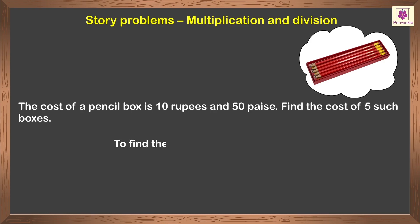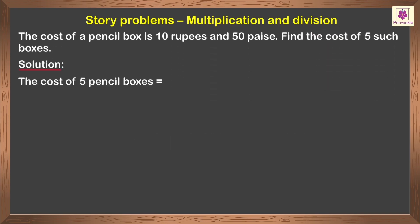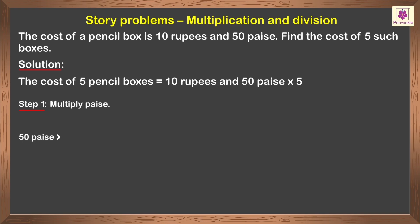Here, to find the cost of 5 boxes, we multiply. That is, 10 rupees and 50 paise multiplied by 5. We shall follow a few steps to find the answer. Step 1: Multiply paise. That is, 50 paise multiplied by 5 is equal to 250 paise.